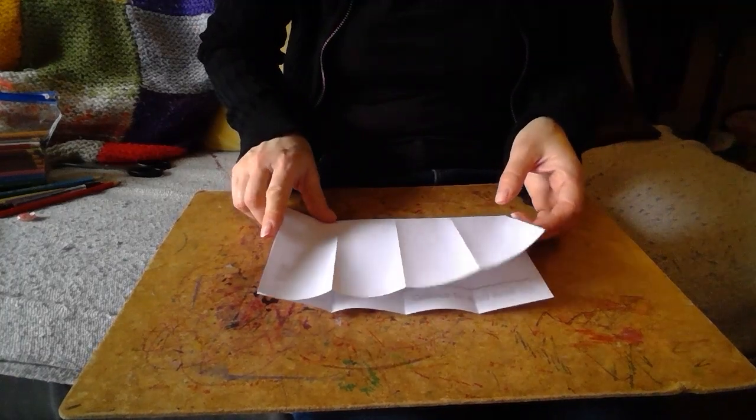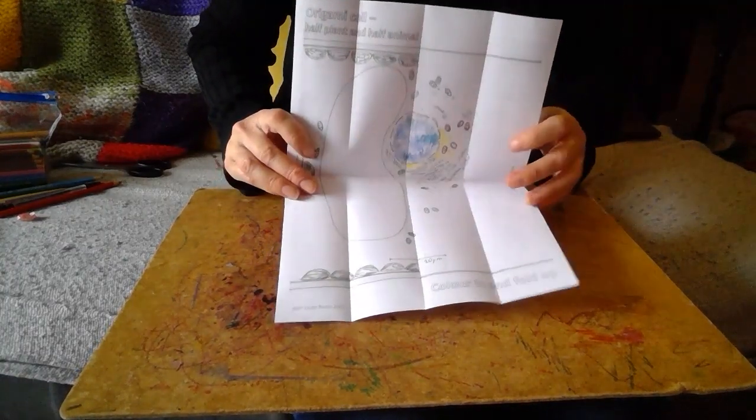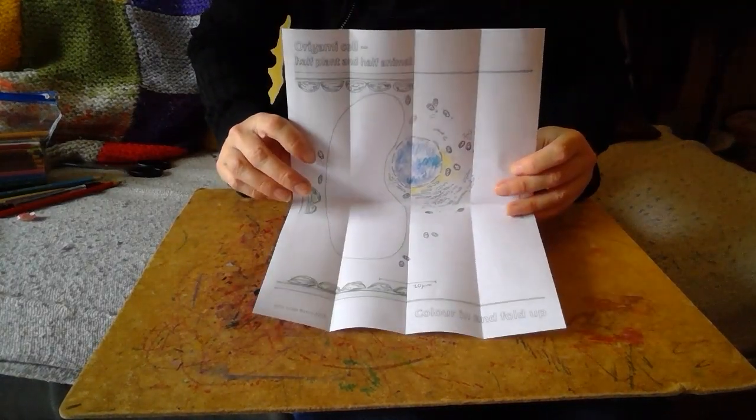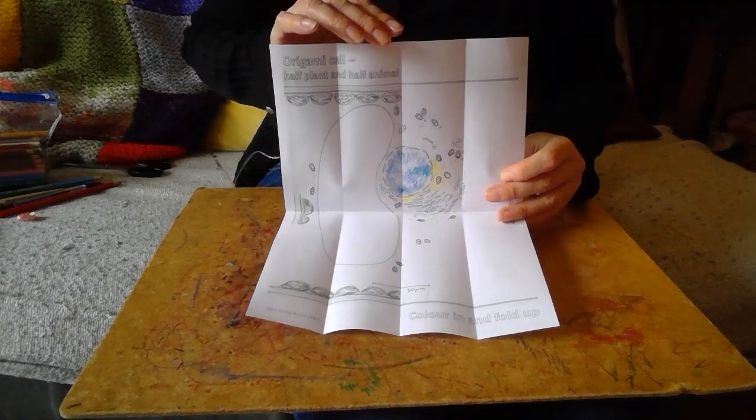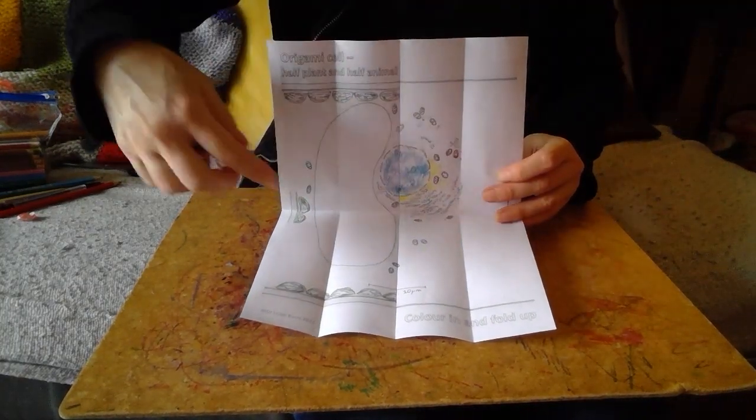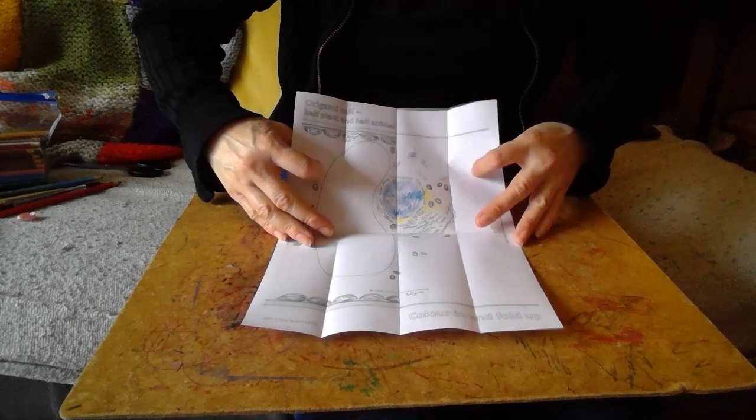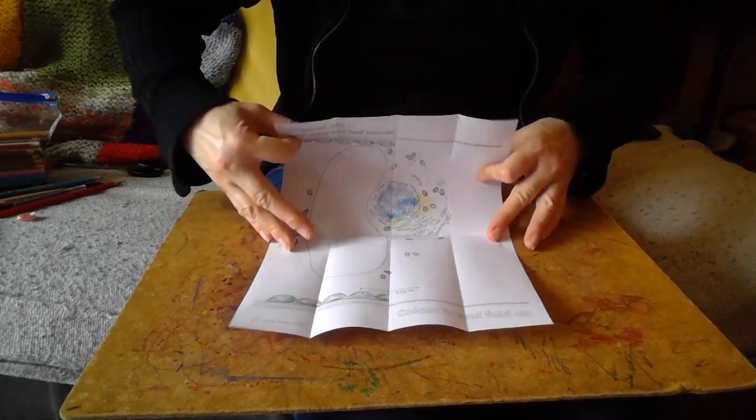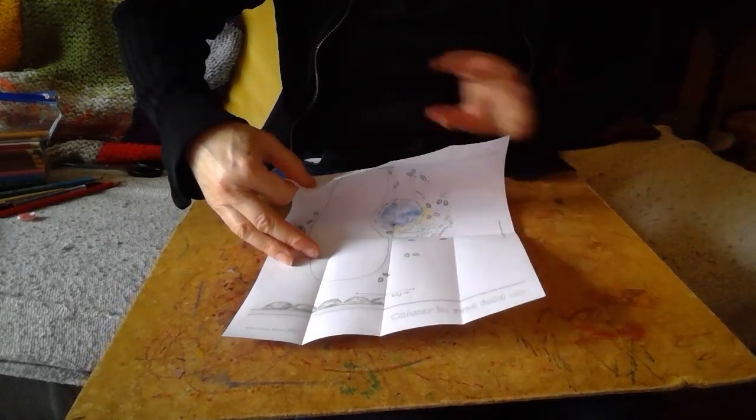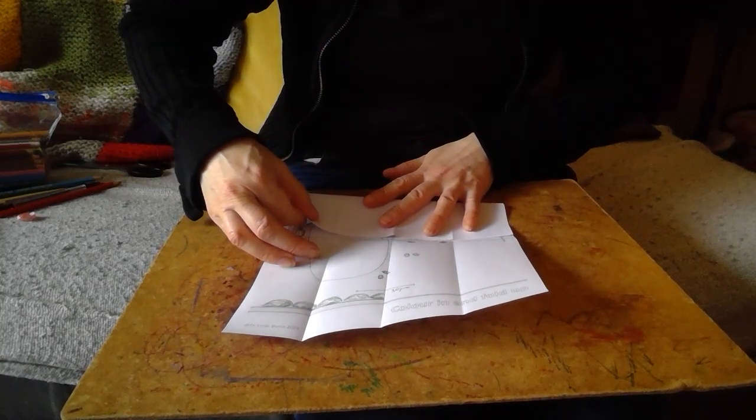These are fairly big cells actually. I've opened it up again. I'm going to take the outside and bring it to the middle line as well, a bit like the last step. The picture is sort of disappearing for now. That's fine.